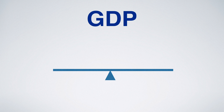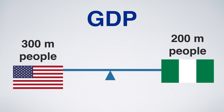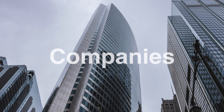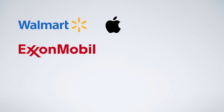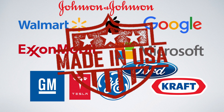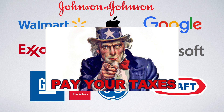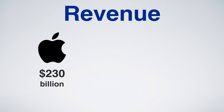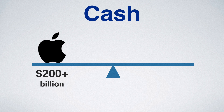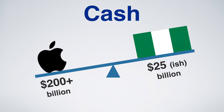Next, companies. When comparing the US with, let's say, Nigeria, you need to wonder what makes the US GDP so huge. There are many angles from which that question can be answered — one of them is companies. There is Walmart, Apple, ExxonMobil, Microsoft, GM, GE, Kraft, Google, and on and on — all US companies paying US taxes, mostly. Apple has a yearly revenue of around 230 billion dollars. That alone is half the GDP of Nigeria, and the cash Apple sits on is eight times Nigeria's foreign reserves.